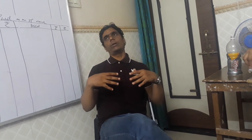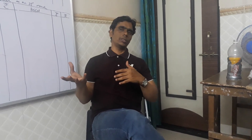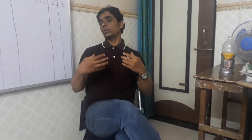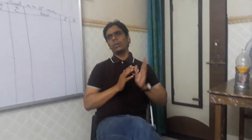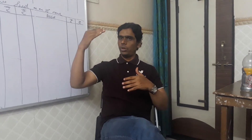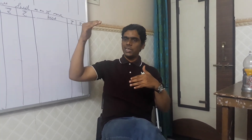The net profit is distributed among the partners in their profit-sharing ratio. For example, if the ratio of partners is 3:2, the profit is divided accordingly. This profit goes to the partners' capital accounts on the credit side, increasing their capital. If there is a loss, it goes to the debit side and the capital will be deducted, reducing the partners' capital and the liability of the business.